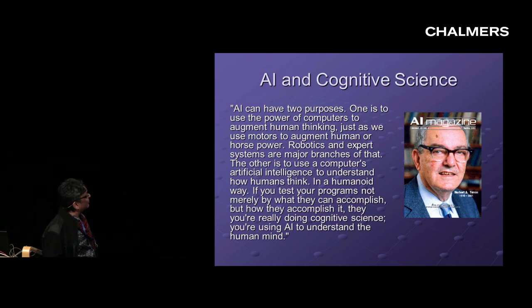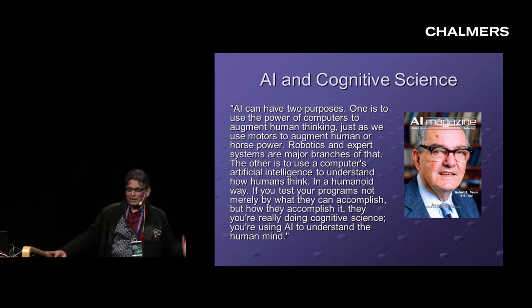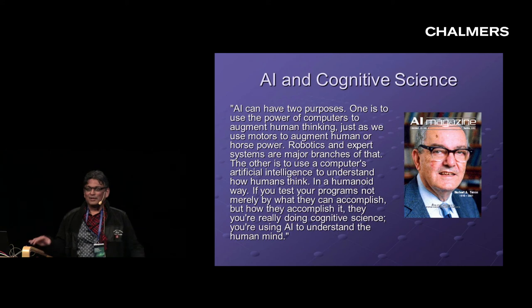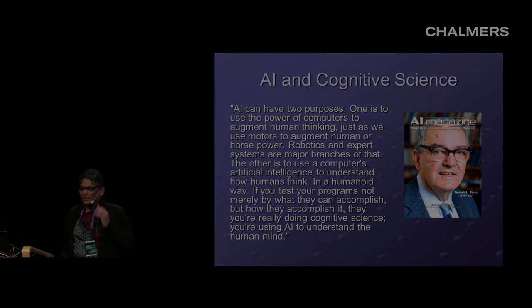And I'll end with this quote from one of the pioneers of AI and cognitive science and economics, Herbert Simon. So he says here that when you're using your AI and ML to see not only what they can accomplish but how you accomplish it, then you're really doing cognitive science. You're using AI to understand the human mind. So he was saying this a long time ago. Among other things, he was a pioneer in this. So let's end with this thought for this session on machine intelligence. Thanks a lot.